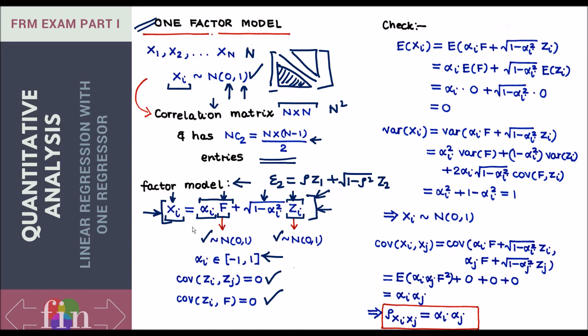If I express xi as this, am I sure that xi follows the distribution which I wanted to follow? Let's check that. The expected value of xi should come out to be zero. Expected value of xi should be expected value of alpha i f plus square root of one minus alpha i square zi. Alpha i and square root of this guy are constants, they can come out. Expected value of f, expected value of z, both are zero. So this gives me the expected value of x to be zero. So we've done well.